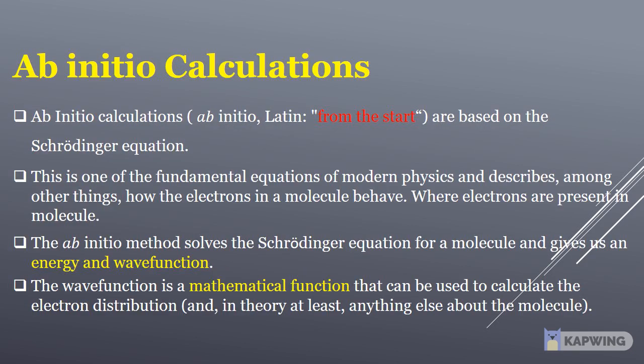Ab initio is a Latin word which means from the start. These calculations are based on the Schrödinger equation. This is one of the fundamental equations of modern physics and describes, among other things, how the electrons in a molecule behave.